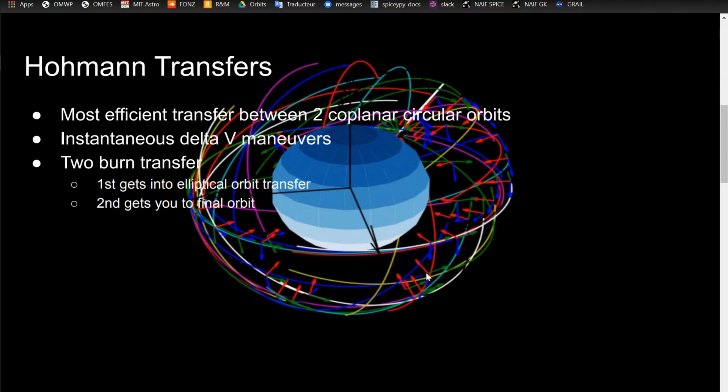Hohmann transfers are the most efficient transfer between two coplanar circular orbits, and they involve two instantaneous delta-v maneuvers. At first, this may seem like a lot of assumptions and restrictions, but this is actually really good for getting ballpark numbers for orbital transfer analysis.